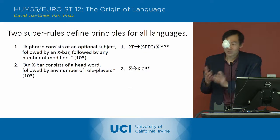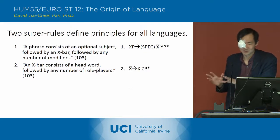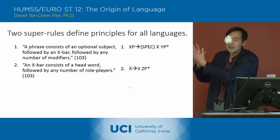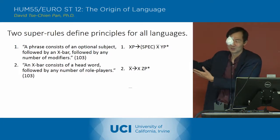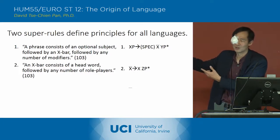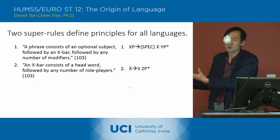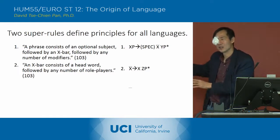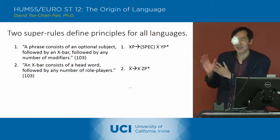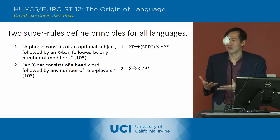Every phrase consists of an optional subject — we'll leave that out for now — the head word and its role players. The verb 'gave' and its role players are a good example: that's the verb head with its role players, followed by any number of modifiers. So that's how you define a phrase — every phrase consists of those things and they're constructed in that way.